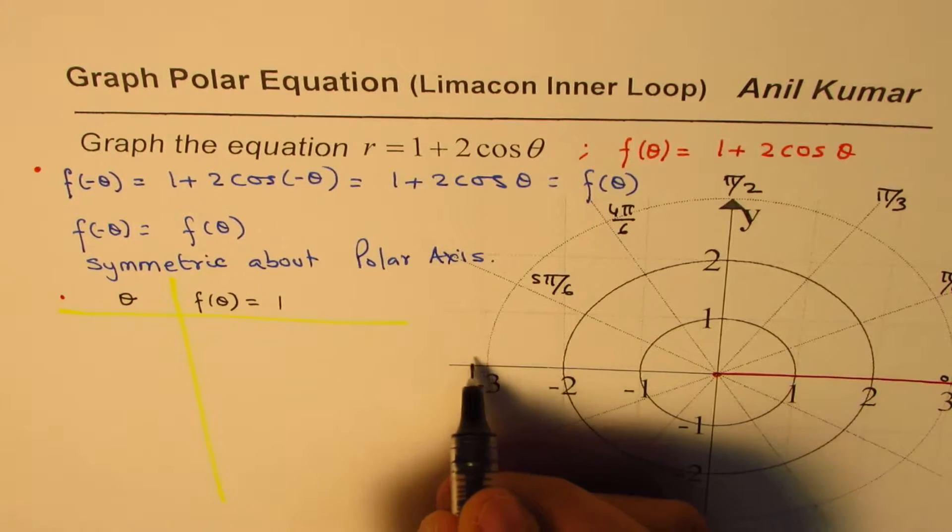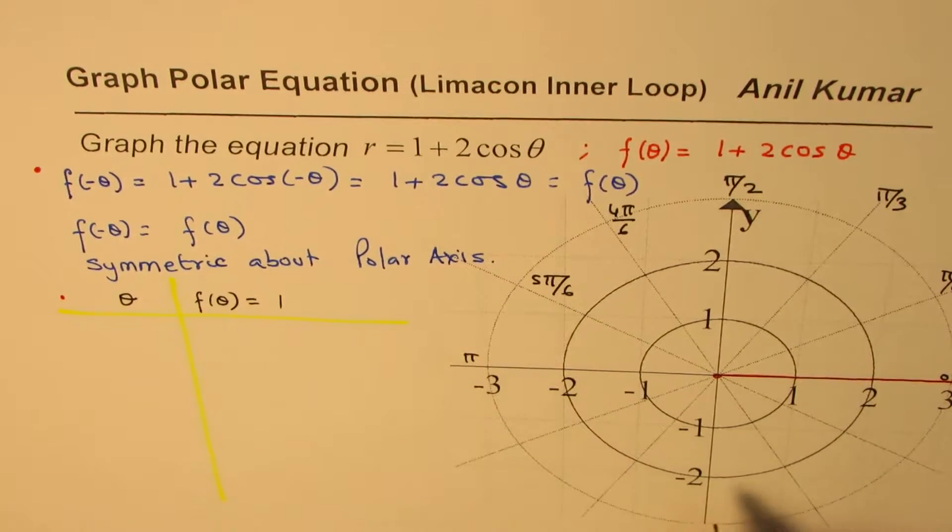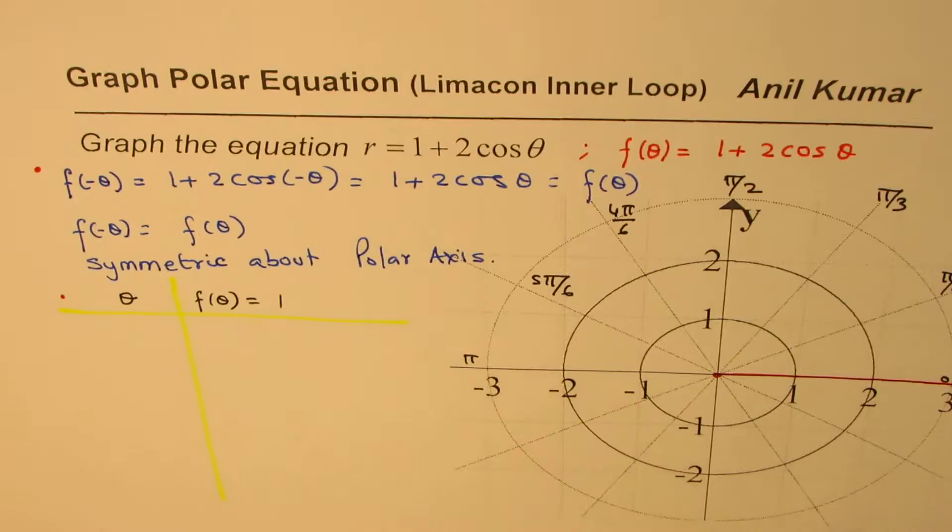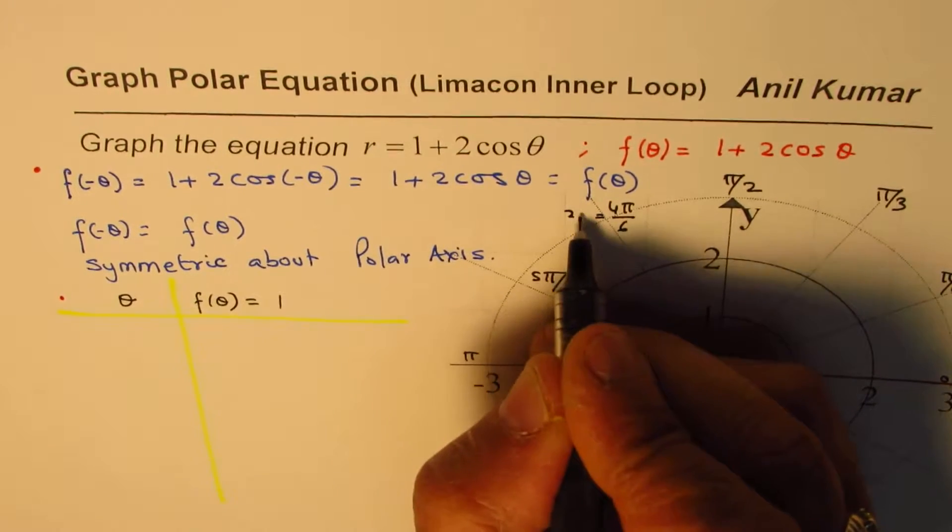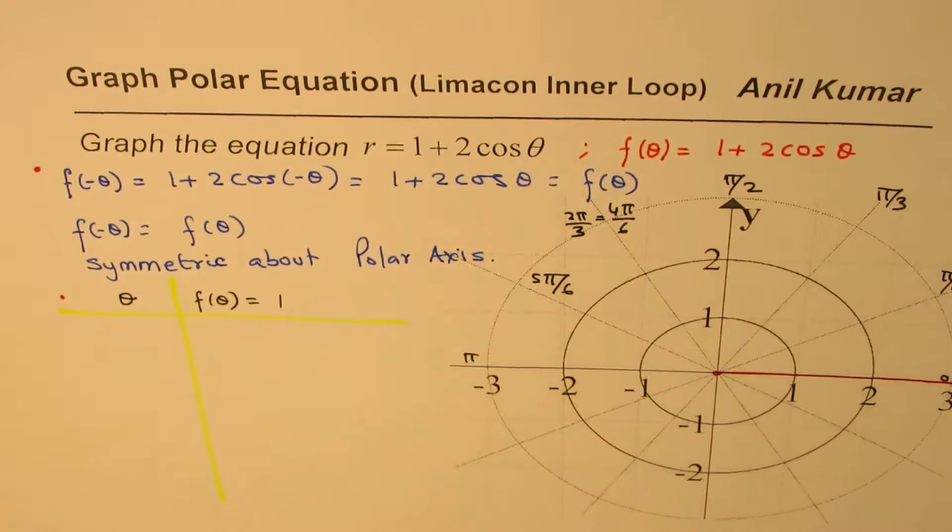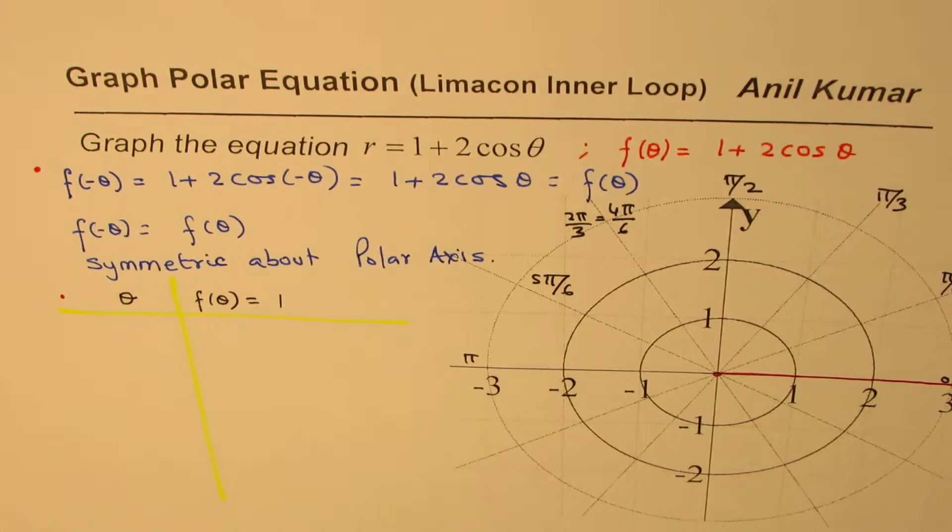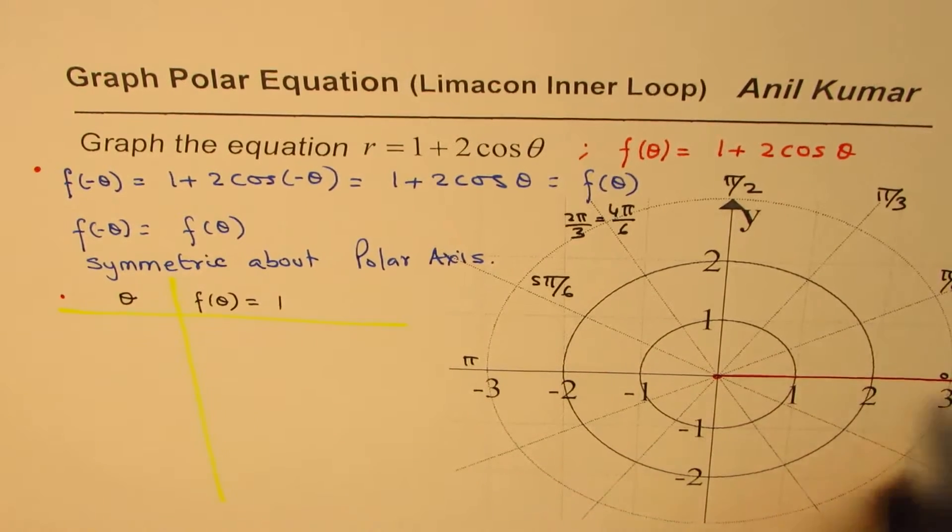I prefer to write like this, and this is pi. So we will take up these values. Of course, I should write this as 2 pi by 3. So these are the points which we will take, starting with 0.